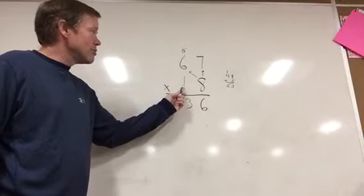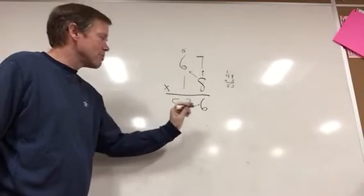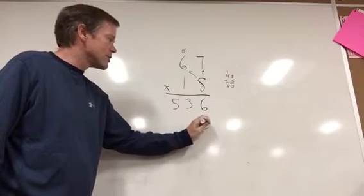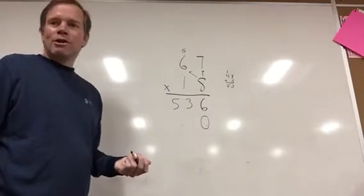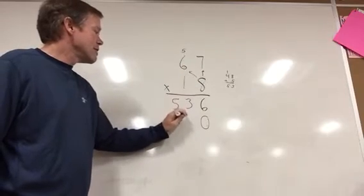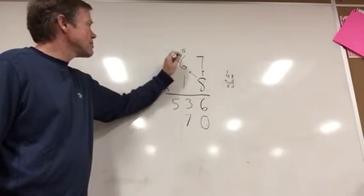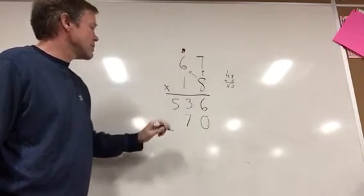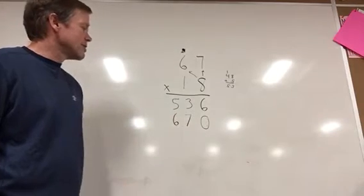Then the next one we're going to really do 10 times 67. So you put your 0 here as always. And then whenever we're multiplying by 1, you won't need your charts for those because 1 times 7 is 7, 1 times 6 is 6. So you've got 670.